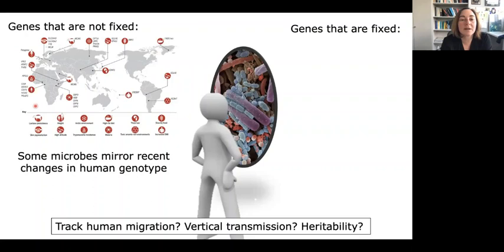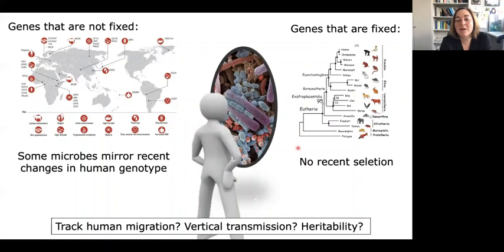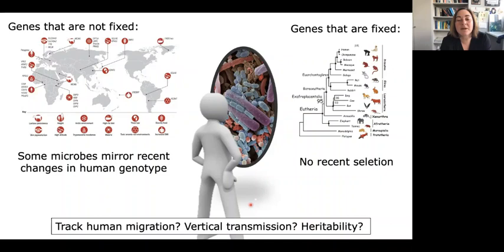We have genes that are not fixed and microbes that mirror some of these more recent changes in human genotype. And we have genes that are fixed — if microbes mirror those, there will be no variation across the population so they won't look heritable. We're trying to understand which ones track human migration, which reflect vertical transmission at larger scales, what it means to be heritable, and which of these interact the most with us and with our health.